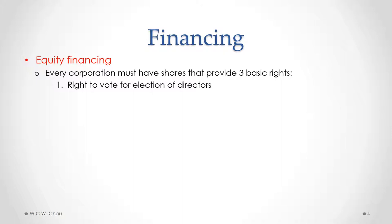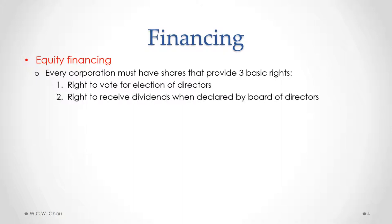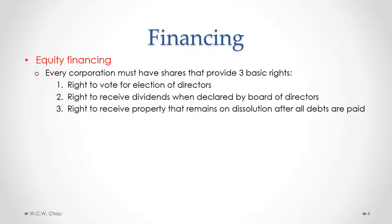The first right is the right to vote for the election of directors. The second basic right is the right to receive dividends when declared by the board of directors — dividends being the payment of net profits by the corporation to the shareholders. The third basic right is the right to receive property that remains on dissolution after all debts are paid. When a corporation is dissolved, its assets are liquidated, debts are paid off first, and any remaining money is parceled out to the shareholders.